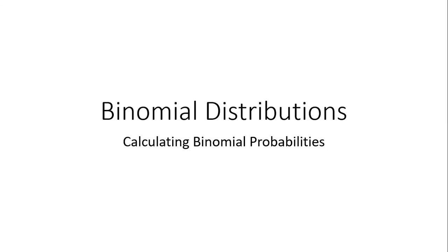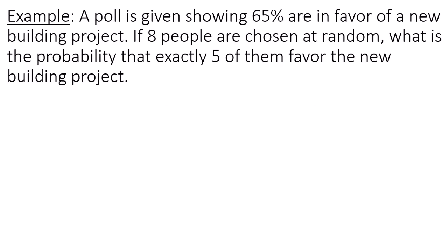Hello, this is a video about how to calculate binomial probabilities. A poll is given showing 65% are in favor of a new building project. If eight people are chosen at random, what is the probability that exactly five of them favor the new building project?